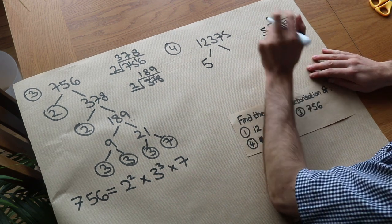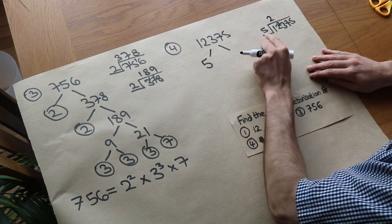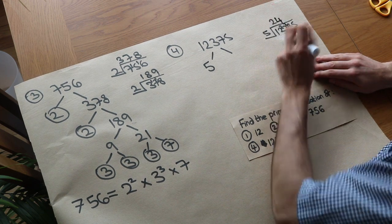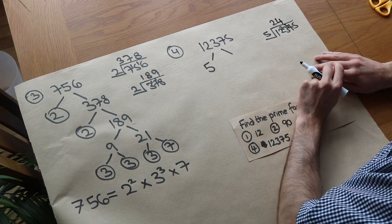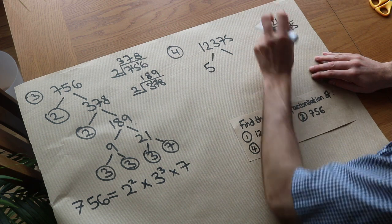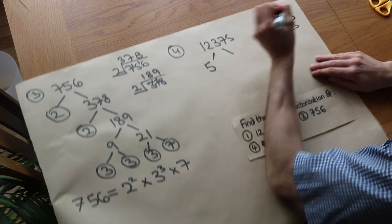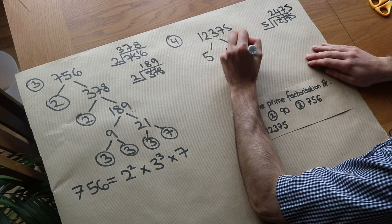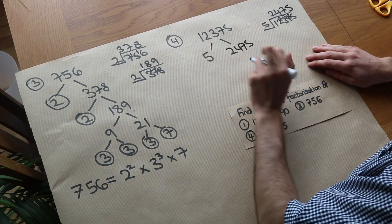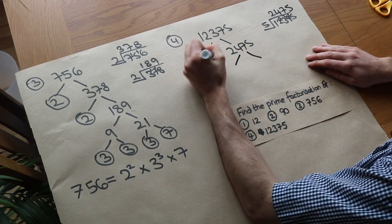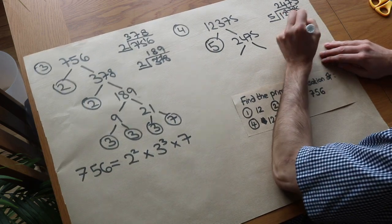Well, 5 goes into 12 twice, remainder 2. 5 goes into 23, 4 times, remainder 3. 5 goes into 37, 7 times, remainder 2. And 5 goes into 25, 5 times. So we've got this. Now it ends with a 5, so it must divide by 5 again. And let's note that 5 is prime, so we can circle it.